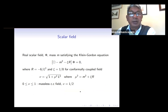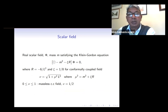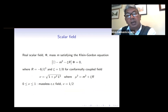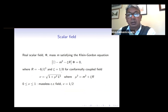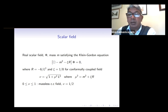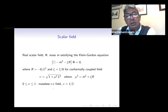Our focus is a real scalar field of mass m satisfying the Klein-Gordon equation, where the box operator is the d'Alembertian in curved space and xi is the coupling constant which couples the scalar field to the Ricci scalar. The Ricci scalar is shown here, and the coupling constant for a conformally coupled field is one over eight in three dimensions. We also define a new term nu, which is the square root of one plus mu squared L squared, where mu squared is given here. Essentially nu encodes information about the mass and coupling constant of our scalar field. We consider nu between zero and one; for instance, for a massless conformally coupled field nu is one half.